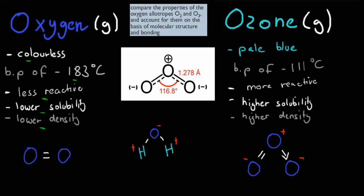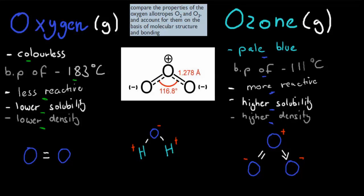Whereas ozone, on the other hand, is a pale blue in color in the gaseous state. It has a boiling point of -111 degrees Celsius, which means you need to get it to -111 degrees Celsius for it to turn from gaseous to liquid — so it has a higher boiling point. It's easier to turn ozone into liquid than it is to turn oxygen into liquid. Ozone is also more reactive, has a higher solubility, and a higher density than oxygen. Those are their properties — some chemical, some physical. Reactivity is a chemical property; density and boiling point are examples of physical properties.